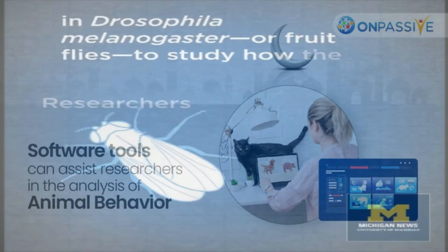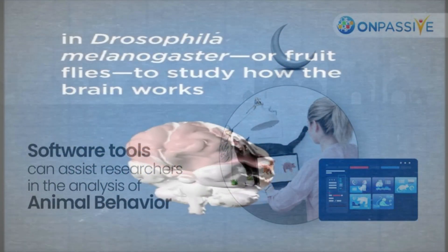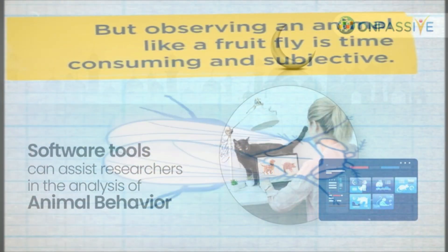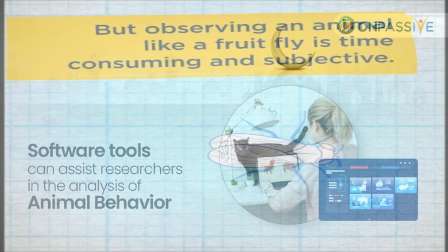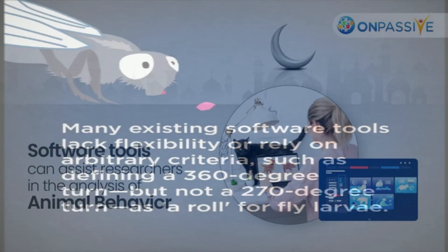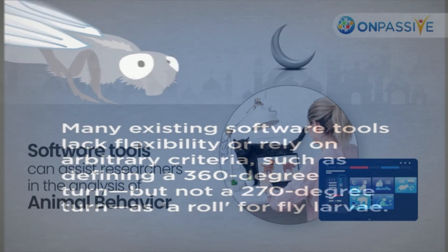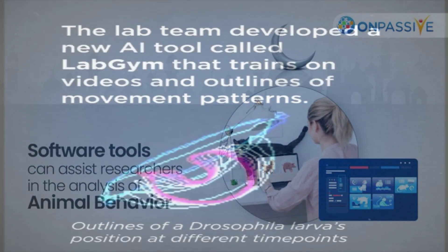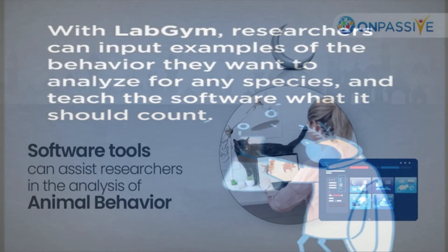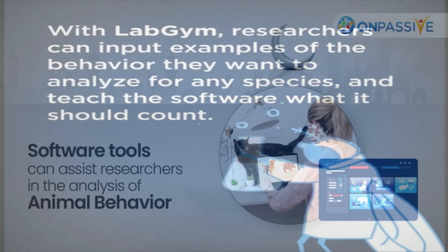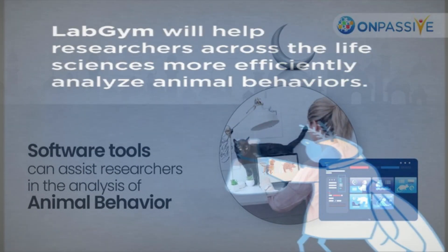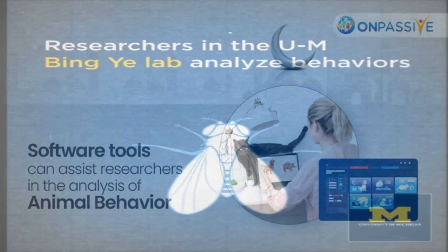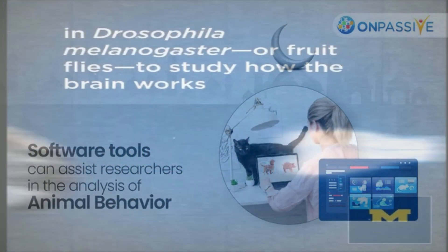To address these issues, Hu and his colleagues decided to create a new program that more closely mimics the human cognitive process — one that thinks more as a scientist would, while still being more user-friendly for biologists who may lack coding knowledge. Researchers can use LabGym to input examples of the behavior they want to evaluate and teach the software what to count. Deep learning is then used by the computer to improve its capacity to recognize and quantify the behavior.